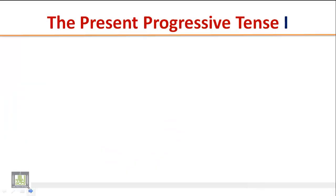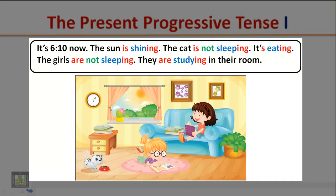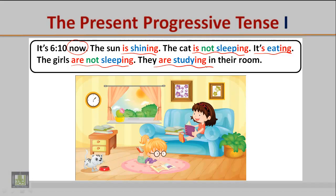Look at the following picture and pay attention to the form of the Present Progressive Tense. It is 6:10 now. The sun is shining. The cat is not sleeping — it is eating. The girls are not sleeping; they are studying in their room.